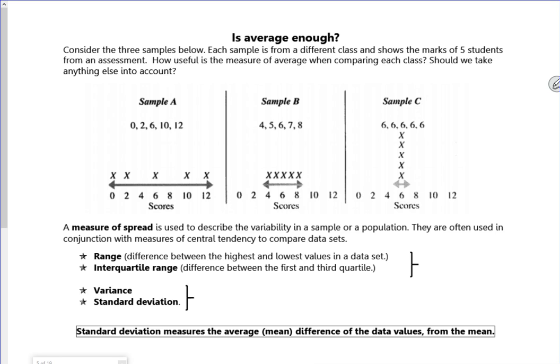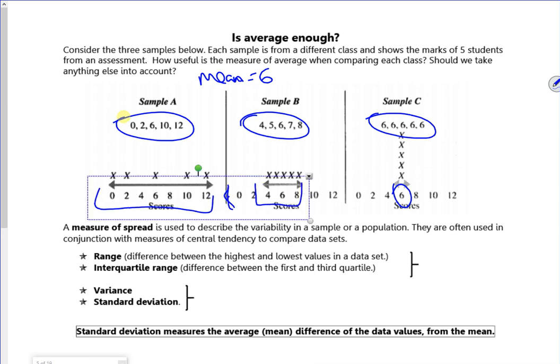So we're looking at this data set. I've got three different sets of numbers but what's important is all of them have a mean of six. Without knowing what's happening with the spread, how they're spread out, it's kind of useless to us. We need to know that bit of extra information. So we need to know what the spread of the data is.